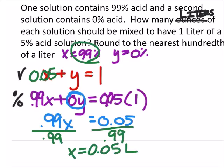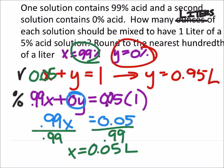Up here I can replace my X with 0.05 and solve for Y. So 1 minus 0.05 tells us that Y is 0.95, so I would want 0.95 liters of 0% solution.